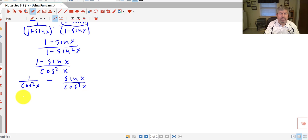I can split sine x over cosine squared x to sine x over cosine x times 1 over cosine x, right? If I multiplied that together, I'd be back to cosine squared x in my denominator. Carrying my secant squared x down, minus sine over cosine is tangent.